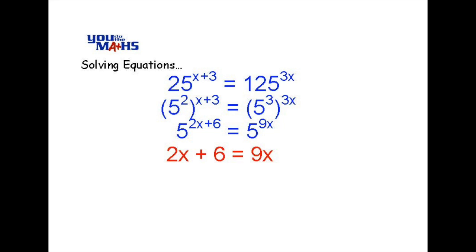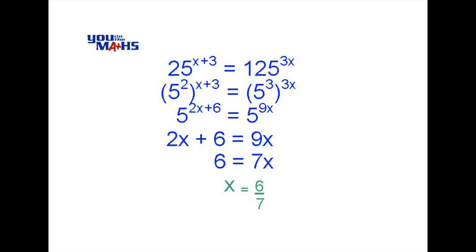The first step will be to get all the x's to one side. So we'll remove 2x from the left hand side. That means that we've taken away 2x and we get 9x take 2x is 7x. And the next step is to remove the 7 and we do that by division. So if we divide 7 on both sides we end up getting x equals 6 sevenths.